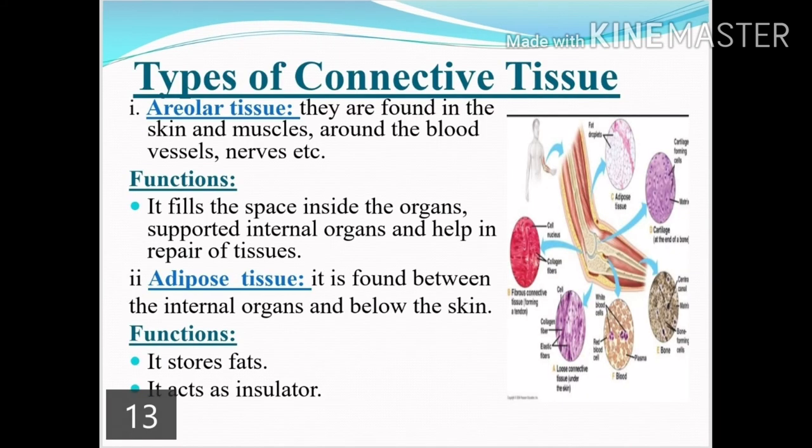Types of connective tissue: the first type is areolar tissue, found in the skin and muscles and around blood vessels and nerve cells. Its function is to fill the space inside organs, support internal organs, and help them repair. The second type is adipose tissue, found between internal organs and below the skin. Its main function is to store fats and act as an insulator.